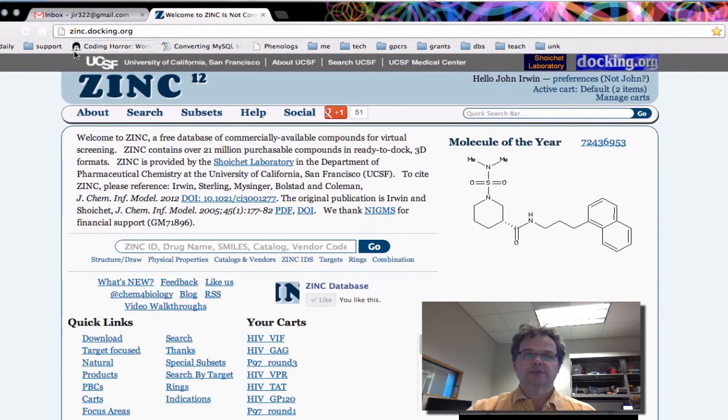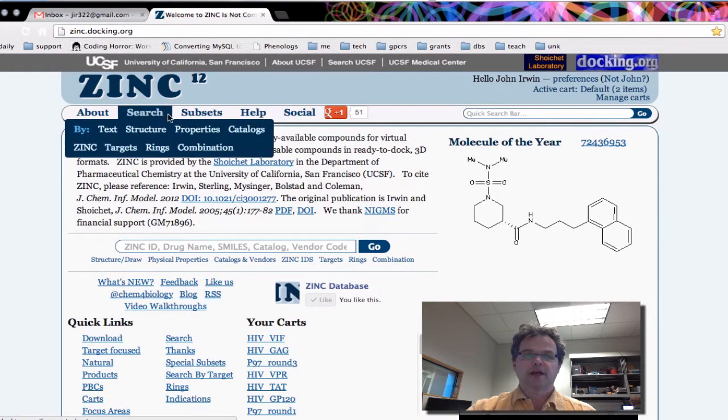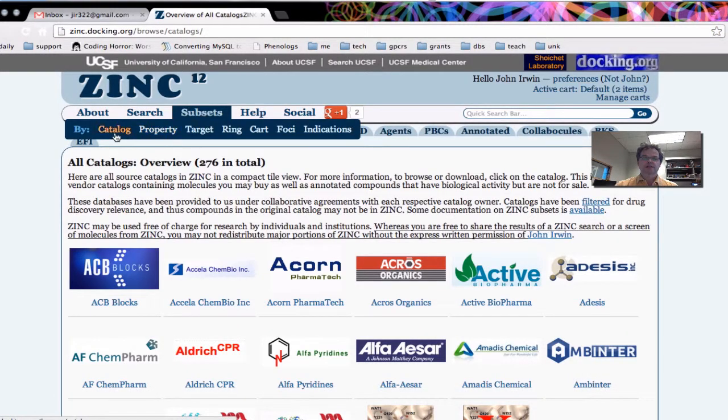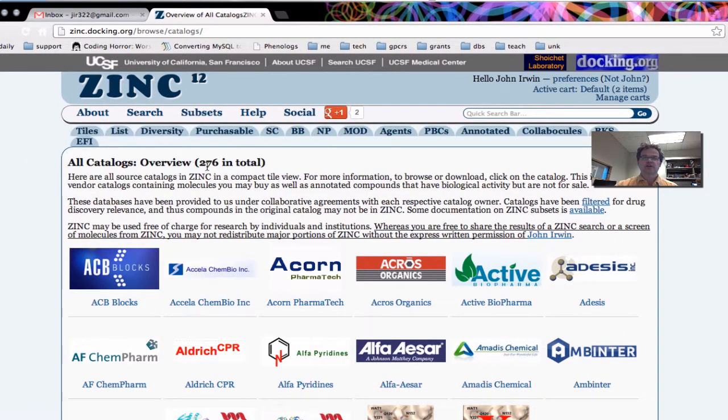So here's ZINC, zinc.docking.org. And I'll just remind you that you can see all the catalogs in ZINC by going to Subsets, Catalog. And you can see that there's 276 catalogs currently in ZINC.